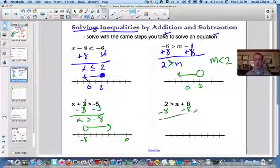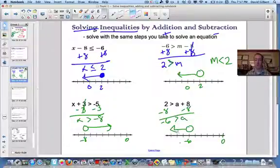Minus 8, minus 8, minus 6 is greater than a. So a has to be smaller than minus 6. 5, 4, 3, 2, all right, there's 0. So we're going to open circle at negative 6 and point this way.